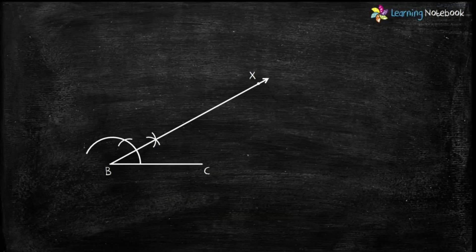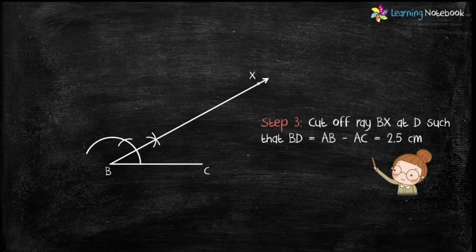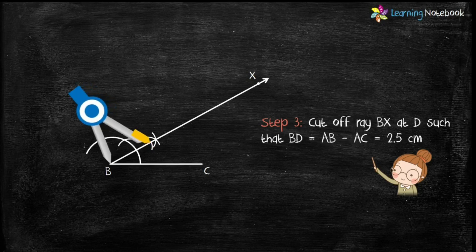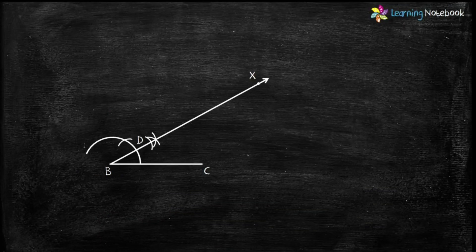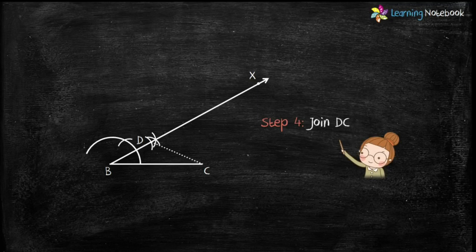We are given AB minus AC equals 2.5 centimeters, so take a radius of 2.5 centimeters and cut off ray BX at point D. In Step 4, join DC.